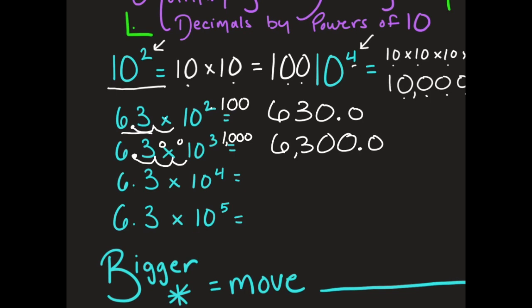Now I have 6 and 3 tenths times 10 to the fourth. I'm multiplying and getting bigger to the fourth power, so I move the decimal point 1, 2, 3, 4 times, fill in those spots with zeros, and my answer is 63,000. I could also show the decimal point at the end as 0.0.